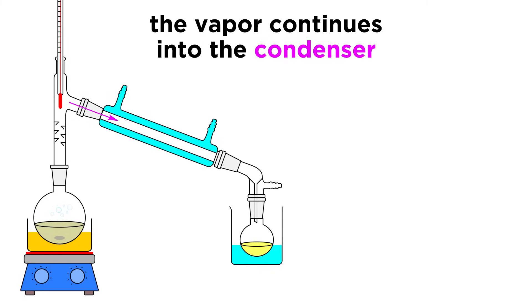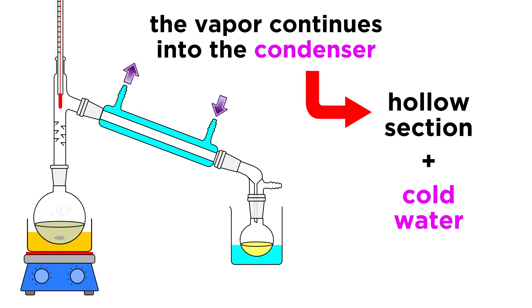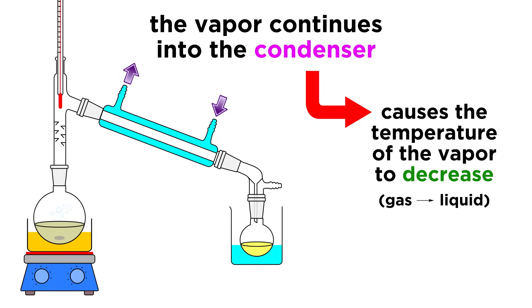The vapor continues into the condenser. This has a central hollow section where the vapor will pass, surrounded by another section where cold water will enter on one side and then exit from the other. This will be constantly running, and against the direction of the vapor. This cold water will cause the temperature inside the condenser to drop, so when the vapor enters this section, it will condense back into a liquid. This liquid is called the distillate, and we will collect it in a receiving flask. And just like that, separation is achieved.